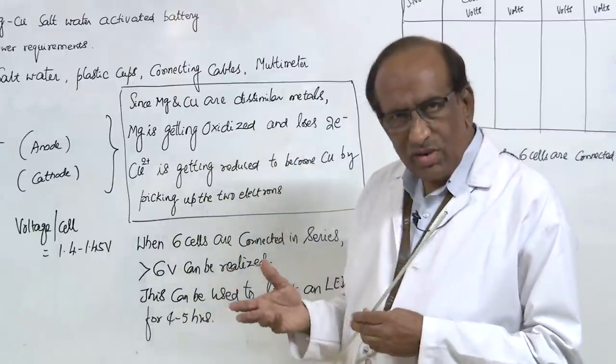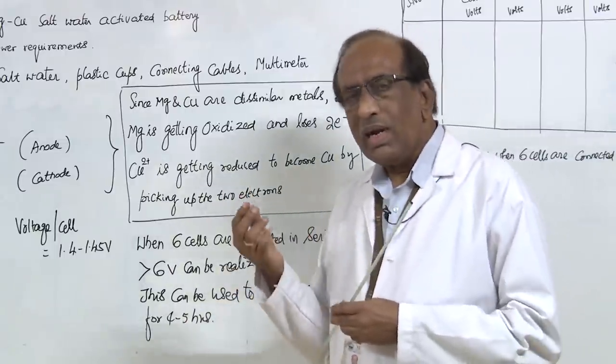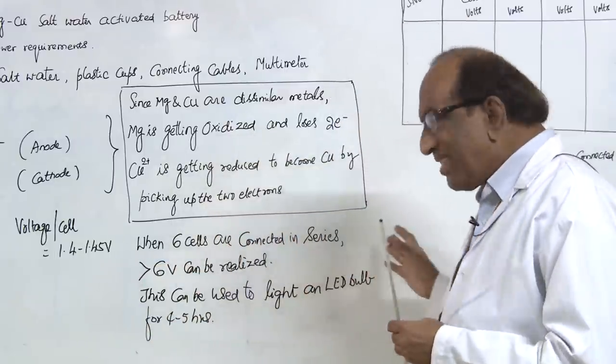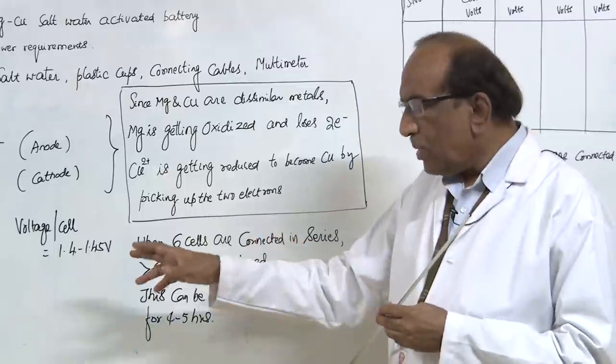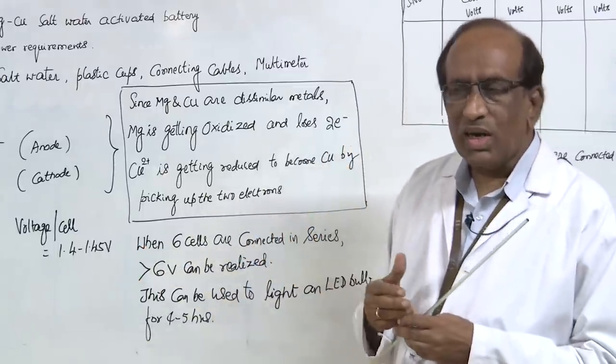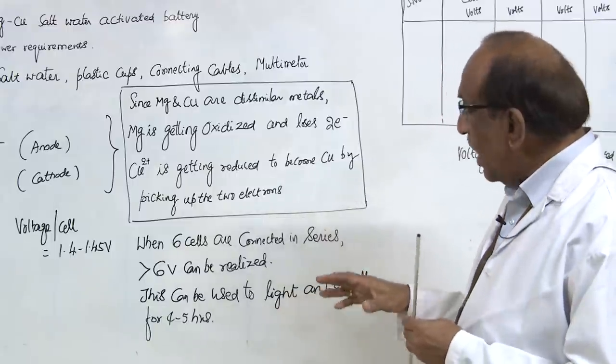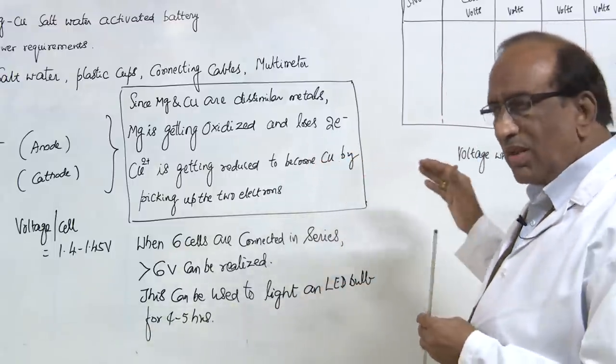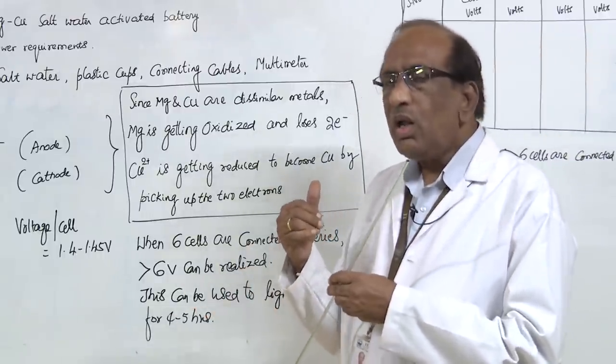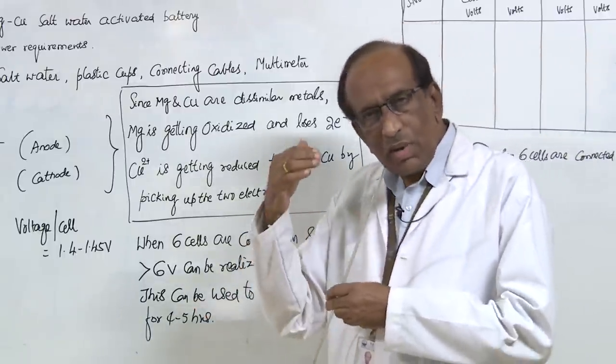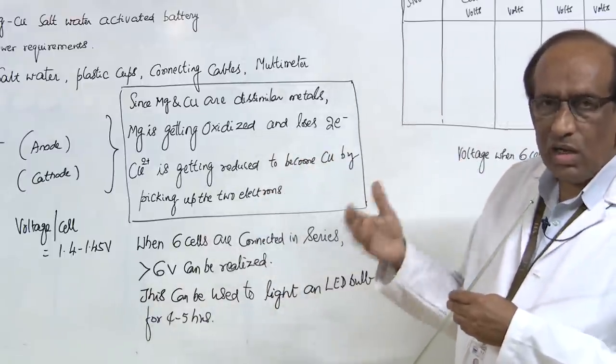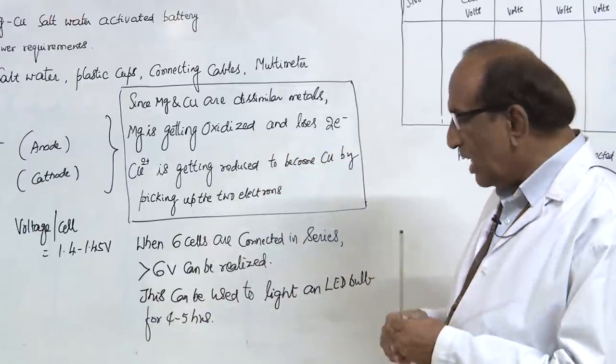Now when you want more voltage, suppose you want to light an LED bulb of 6 volts, you connect 6 cells in series. You will get 1.5 into 6, approximately 9 volts or 7 volts or 8 volts you will get. But one thing is as the time is progressing, magnesium gets consumed and the voltage will drop down and after 4 or 5 hours the voltage will come to very very low levels where you cannot light LED bulb or anything else.